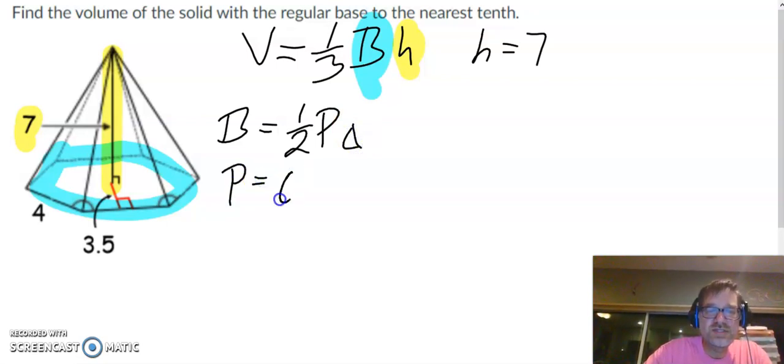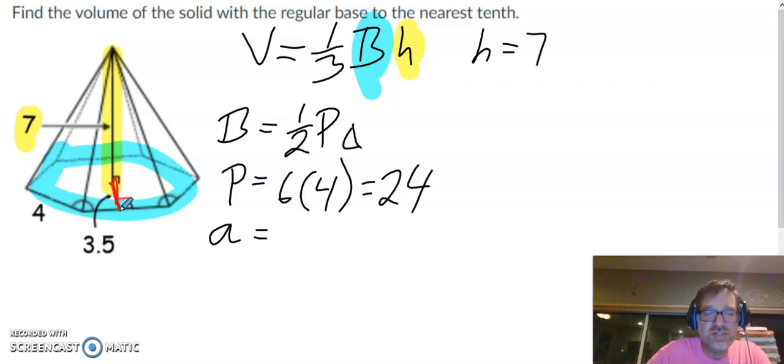Perimeter is the distance around the hexagon. That's going to be 6 times 4, which is 24. Little a is the apothem. Apothem is the distance between the center of the pyramid and the edge. So this apothem is 3.5.